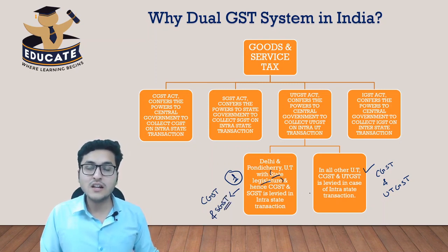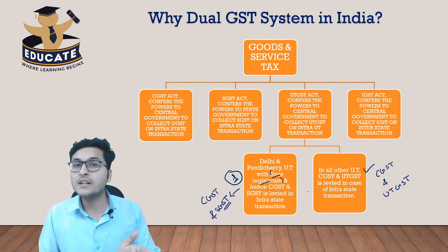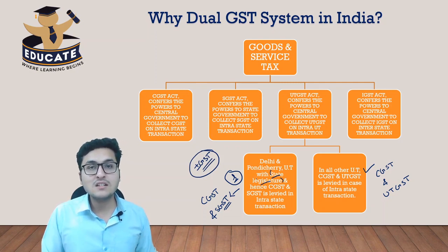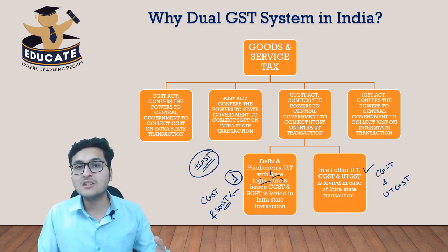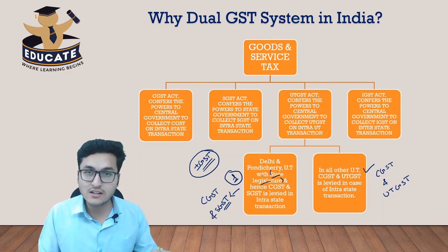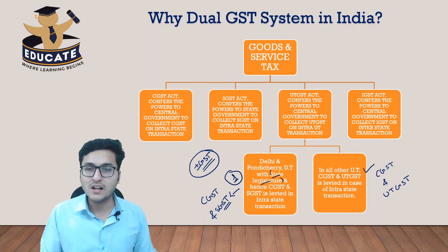For interstate transactions the concept remains the same — if an interstate transaction occurs from one union territory to another, IGST will apply. So IGST is always applicable for interstate transactions. For intra-union-territory transactions, if the union territory has its own state legislature, CGST and SGST apply; if the union territory does not have its own state legislature, CGST and UTGST apply.